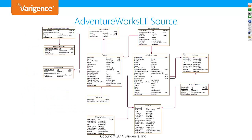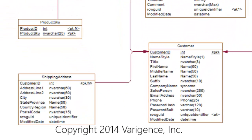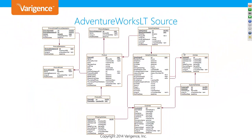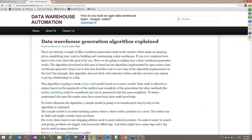The first thing we're going to do is take the AdventureWorks LT source — I've taken a backup and restored it into a database called AWLT_3NF. I applied a SQL script to create a couple of extra tables, including ProductSKU and ShippingAddress, just to simulate some of the scenarios in the article. Step one is analyze. If you've received the link to the article, you'll see the code is almost copied and pasted straight from it.